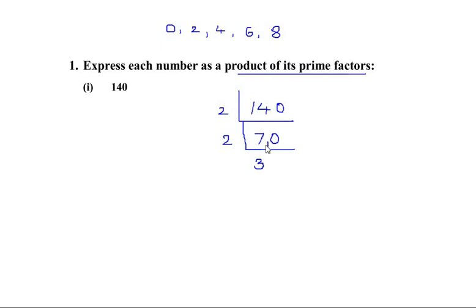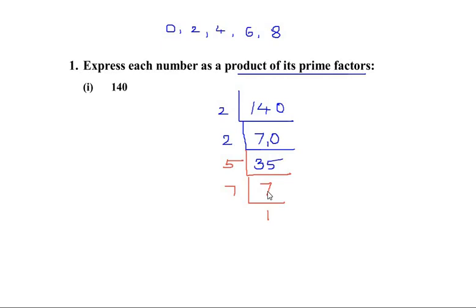So again we divide 70 by 2, giving us 35. Now the number is ending with 5, so whichever number ends with a 5 is definitely going to be divisible by 5. 5 is also a prime number, so we choose only prime factors. 5 times 7 gives us 35, and 7 is itself a prime number — it is divisible only by itself. So we have got all the factors as primes.